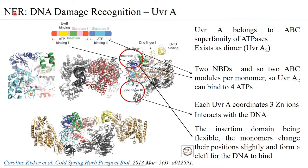The first molecule of the NER is basically involved in recognizing the DNA damage. Because it has ATP molecules, there are reports saying that the binding of ATP and its hydrolysis enables UVR-A along with UVR-B to scan the DNA for DNA damages.